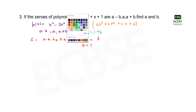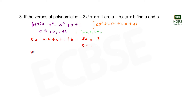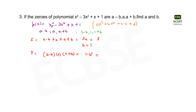In order to find the value of b, we will use another relationship between the zeros and the coefficients of the polynomial — that is, the product of the three zeros will be equal to the constant term of the polynomial divided by the coefficient of x³.